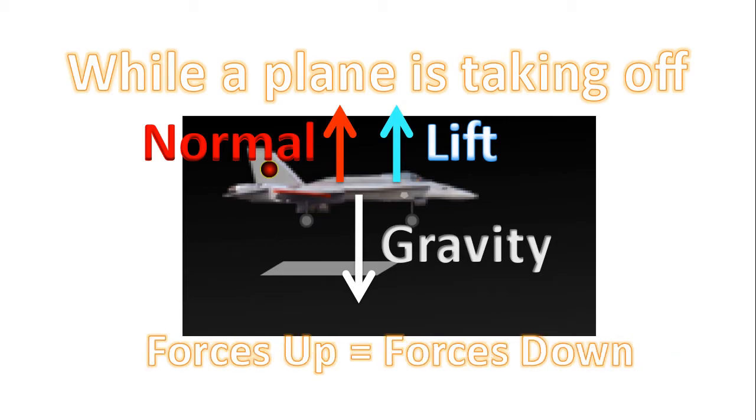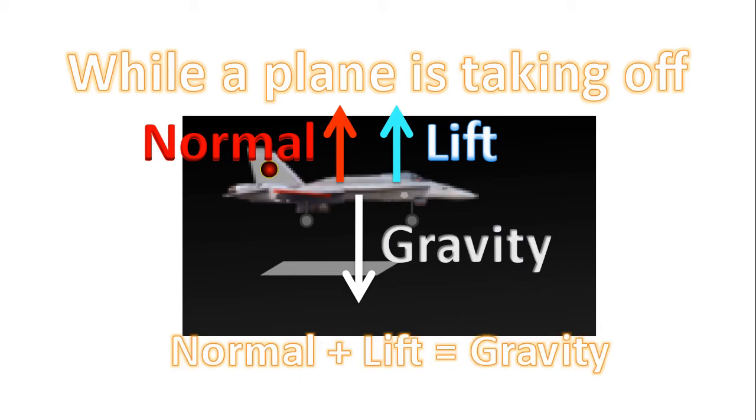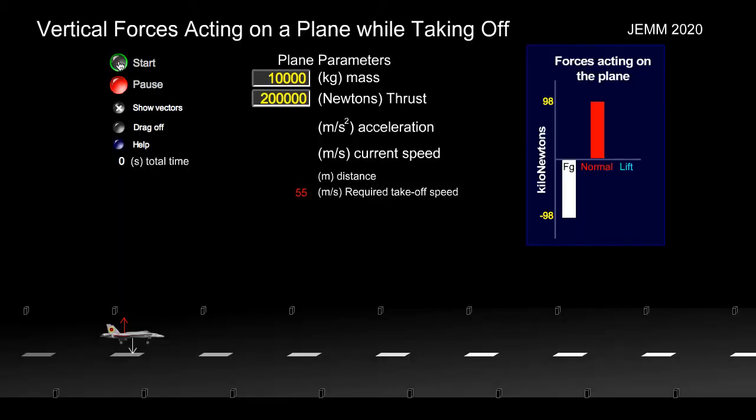That means that all the forces acting upwards, in this case normal and lift, have to be equal to all the forces pulling the object downwards, in this case gravity. Because the forces have to be balanced. And so we have the equation that normal force plus the lift force is equal to the gravity. And with that in mind, notice that these two columns will always add up to that column. Normal and lift is equal to gravity.